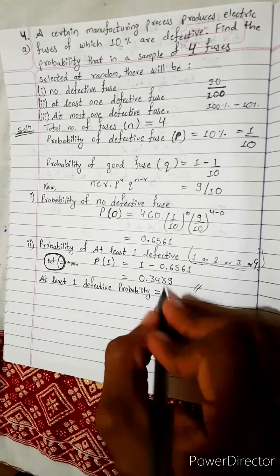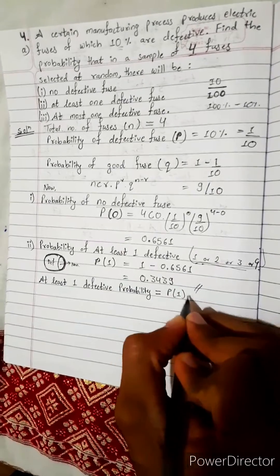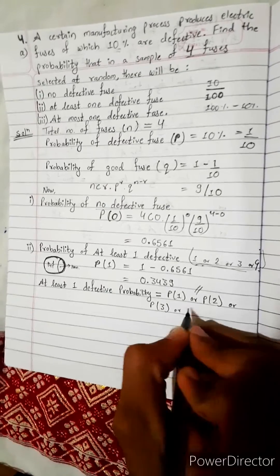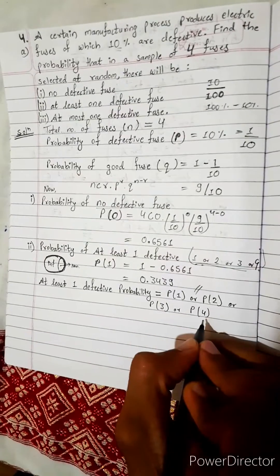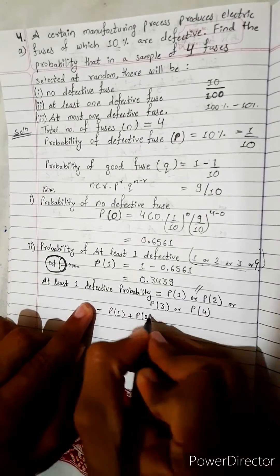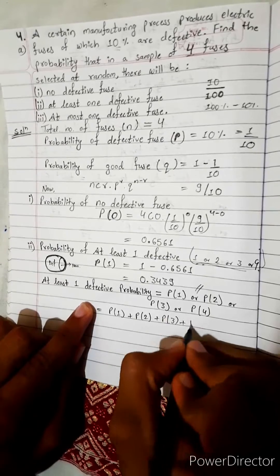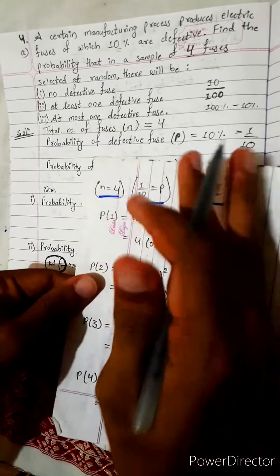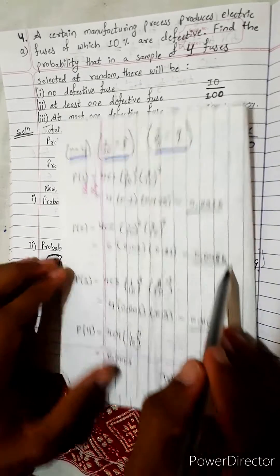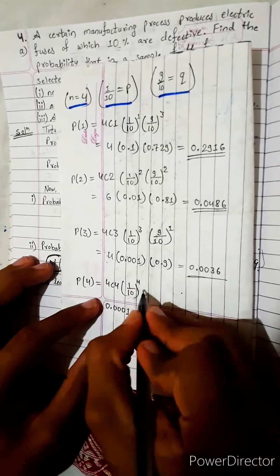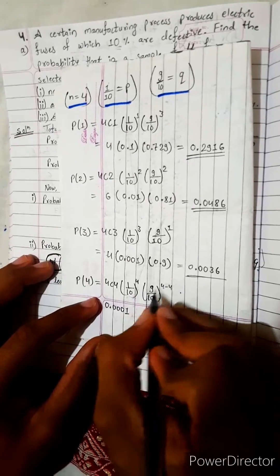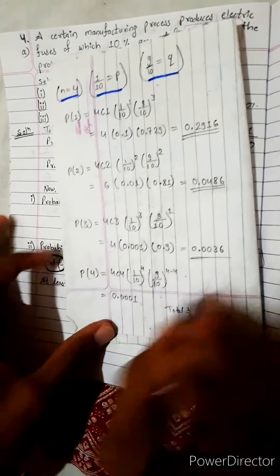Next method is probability of at least one defective: either only one defective or two defective or three defective or all four defective. So add this. It will be P1 plus P2 plus P3 plus P4. Here it will be 9 by 10 power 4 minus 4. Four minus four is zero, and anything power zero means one, so I do not write anything.